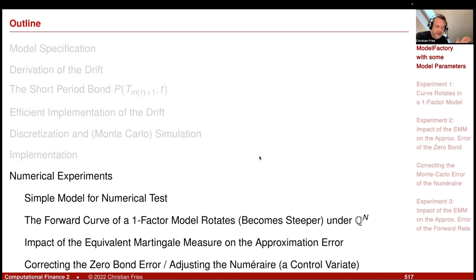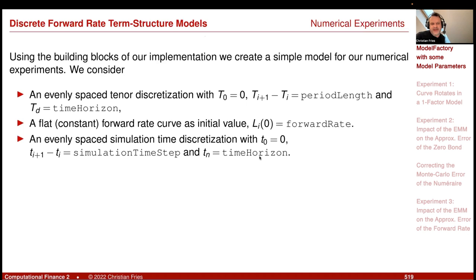The simple model we set up will also be useful later when we investigate the behavior of correlation and volatility. As parameters, we consider the tenor time discretization — specifically the period length, which is our delta capital T. It's an evenly spaced interest rate curve discretization. For example, a period length of 0.5 means half a year, giving us a semi-annual forward rate. We also specify a time horizon of 20 years and a single initial value for the forward rate as our starting point.